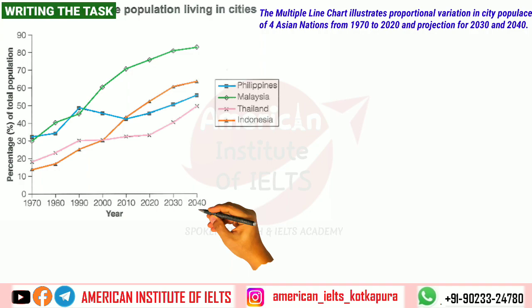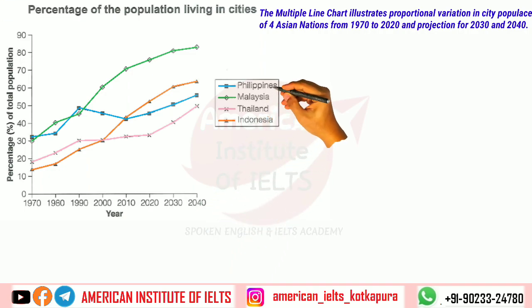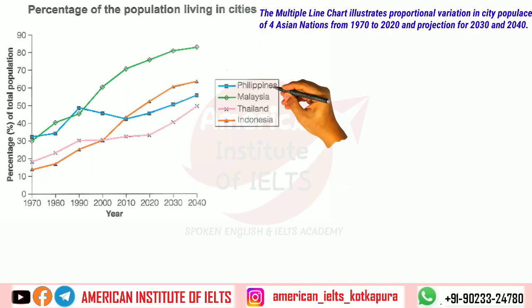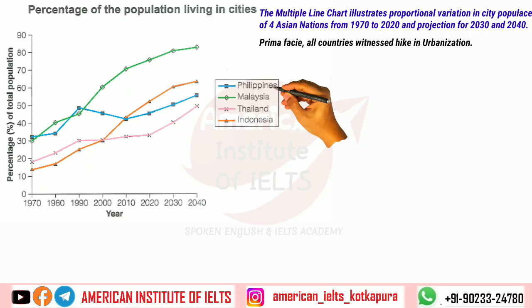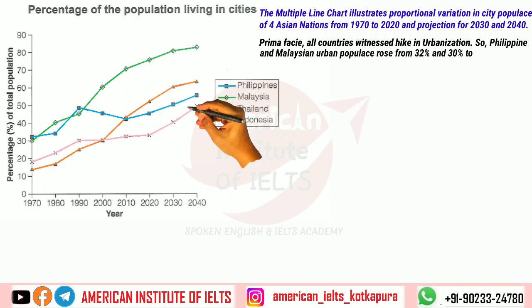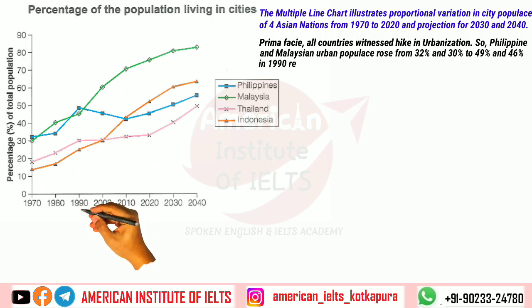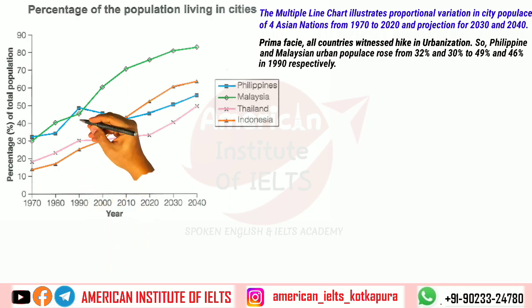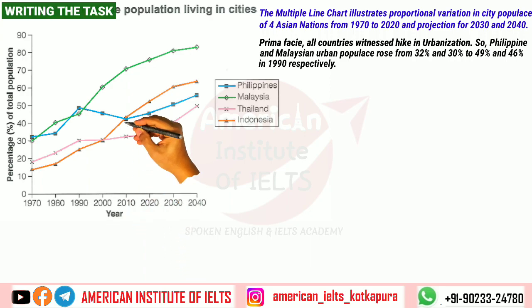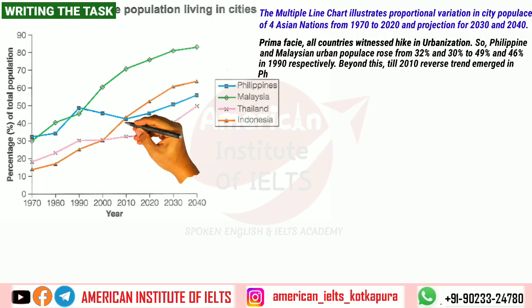Now let's talk about Philippines and Malaysia together and compare them. As an overall observation, all countries witnessed a hike in urbanization — prima facie, all countries witnessed a hike in urbanization. For the first two decades: Philippine and Malaysian urban population rose from 32 and 30 percent to 49 and 46 percent respectively in 1990. Beyond this, looking at the data till 2010, a reverse trend emerged in Philippines.